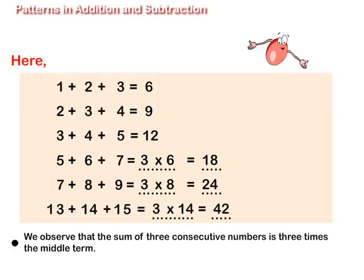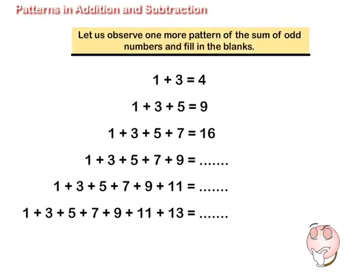To complete 13 plus 14 plus 15, we multiply 14 by 3 and get 42. Let us observe one more pattern of the sum of odd numbers and fill in the blanks.